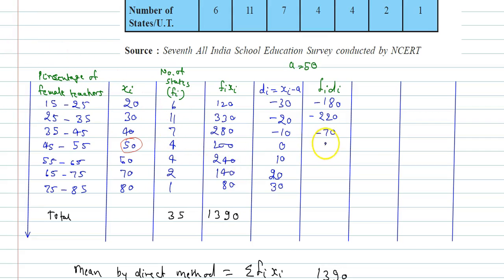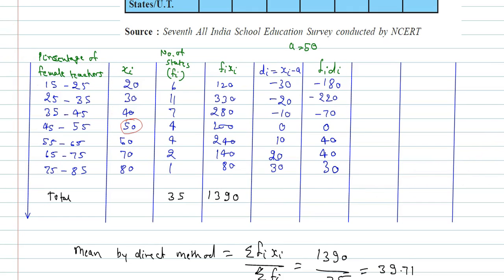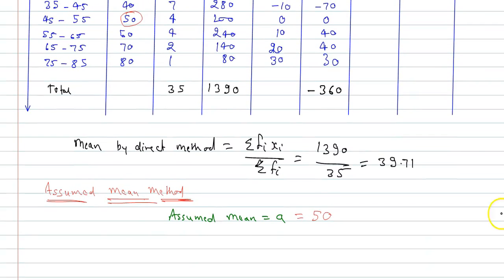Continuing FiDi: 4×0 = 0, 4×10 = 40, 2×20 = 40, and 1×30 = 30. The total ΣFiDi = −180 − 220 − 70 + 0 + 40 + 40 + 30 = −360.